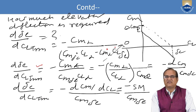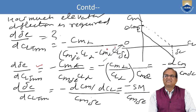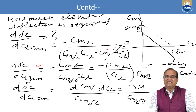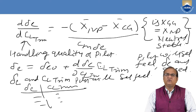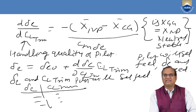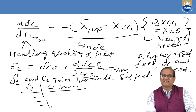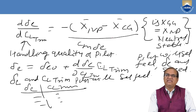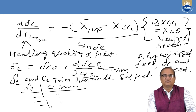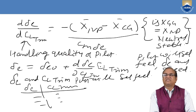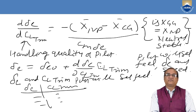Since dCm/dCL is the static margin, we have learned this in our previous class. Therefore: d(delta_E)/d(CL_trim) = -dCm/dCL / Cm_delta_E = -SM / Cm_delta_E. Where SM = X_bar_NP - X_bar_CG. If the center of gravity coincides with the neutral point, SM = 0, there is no deflection required and the aircraft is in a neutral position.